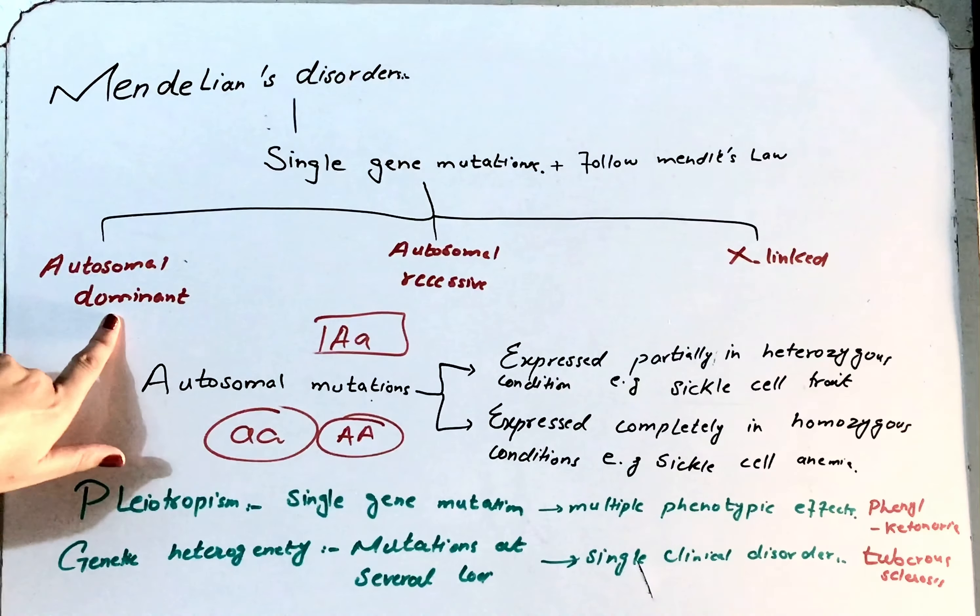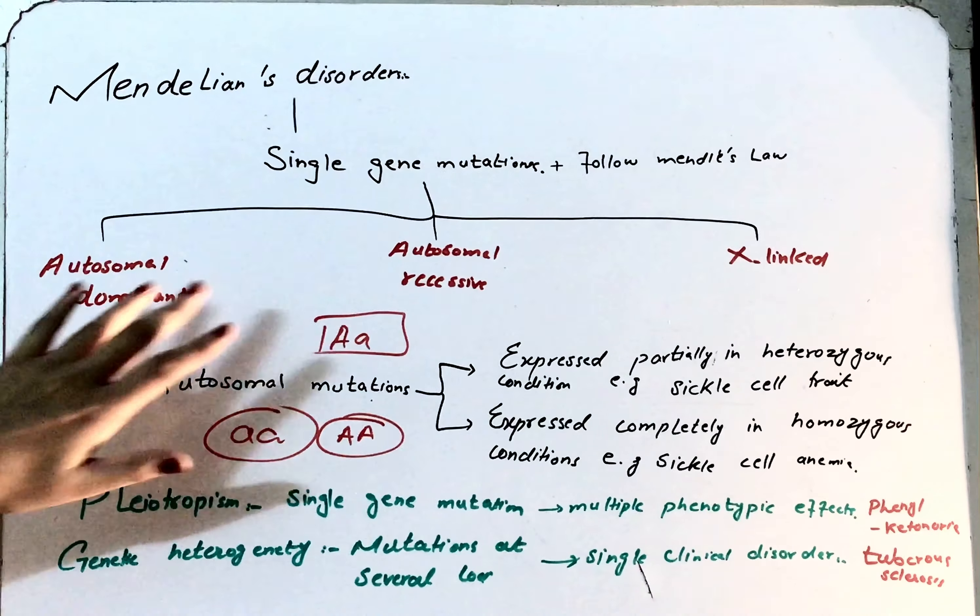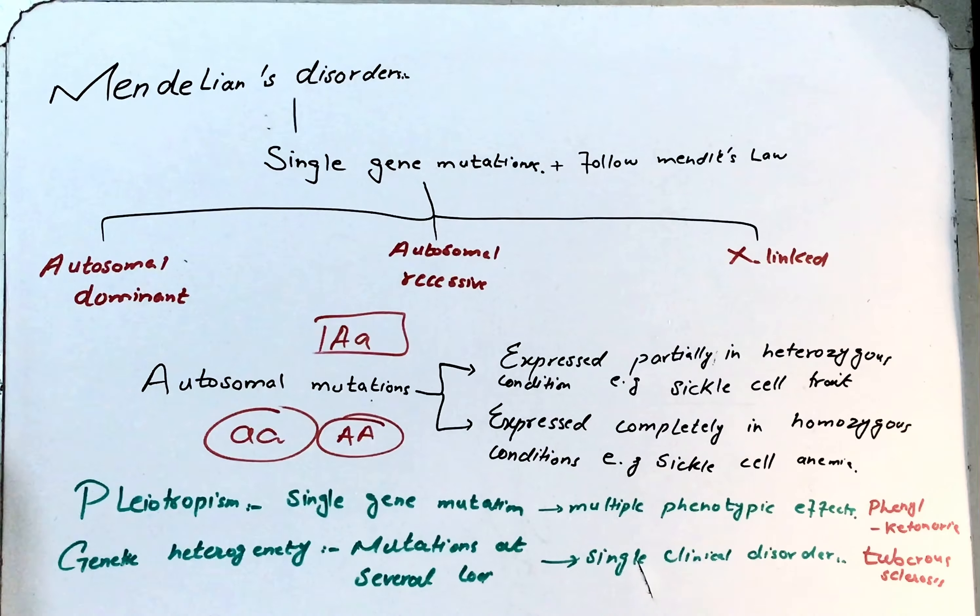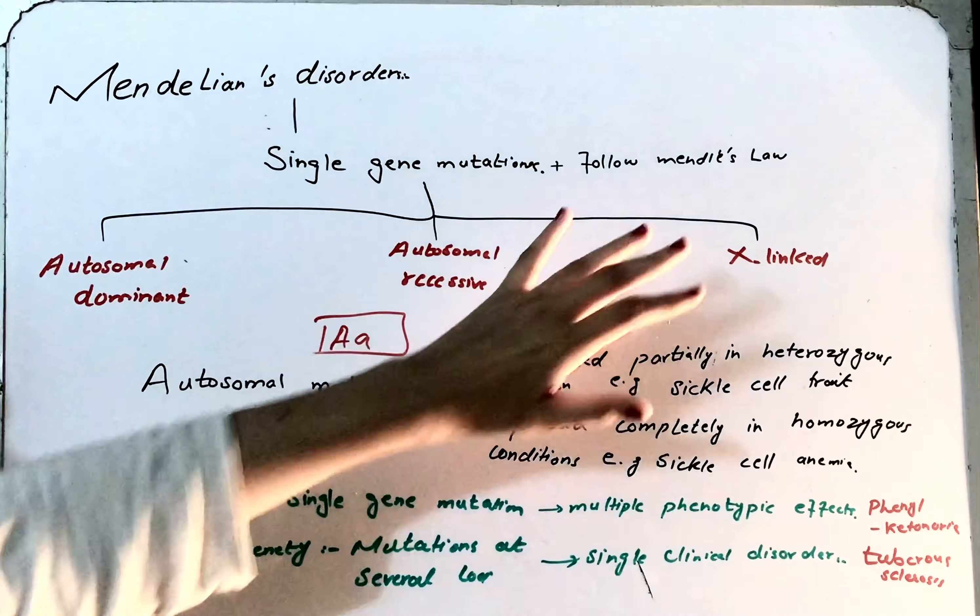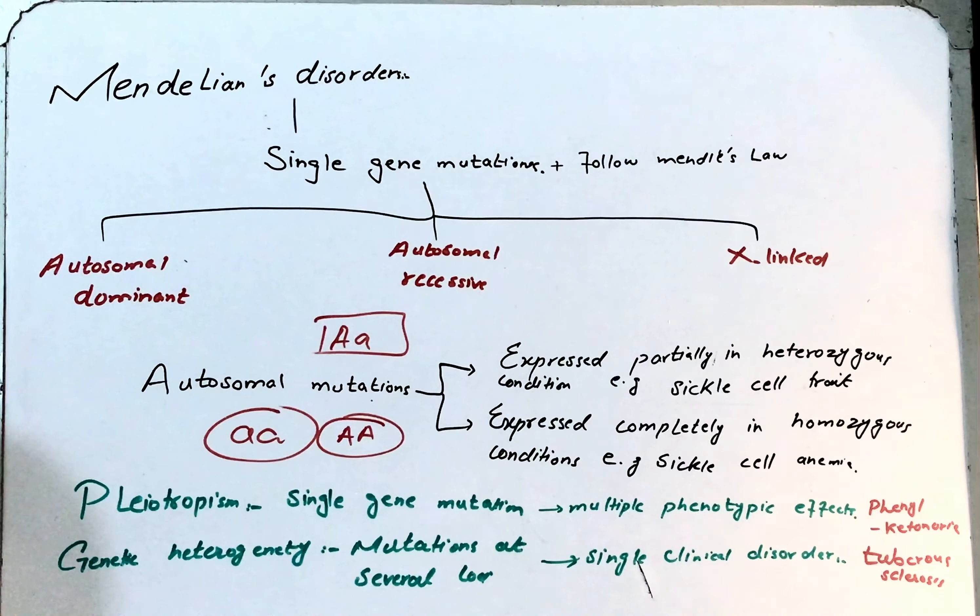Now these disorders can be of three types: autosomal dominant, autosomal recessive, and X-linked. As the name depicts, there is mutation on the autosomes or on the sex chromosomes. We have 22 pairs of autosomes and one pair of sex chromosomes.